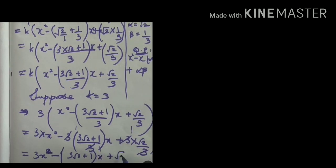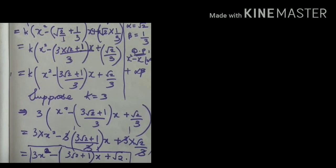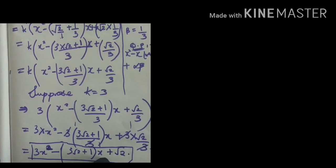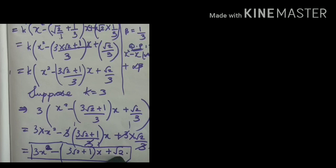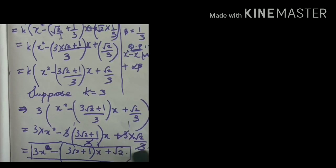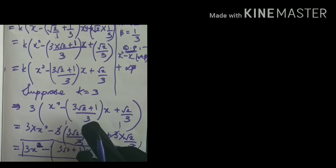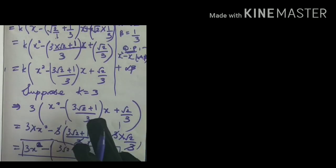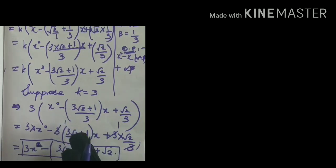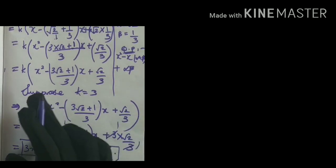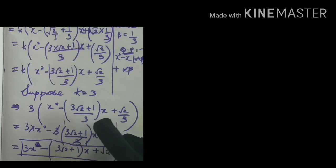So my final quadratic equation is 3x squared minus (3 root 2 plus 1) into x plus root 2. Hope you have understood how to form a quadratic polynomial when zeros are given. Remember the standard form: x squared minus (alpha plus beta) x plus alpha beta. If you have a fraction in the denominator, choose k equal to that denominator value to cancel the fractions. Multiply k with each term and cancel accordingly.